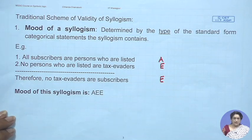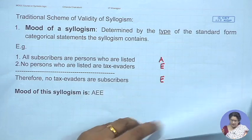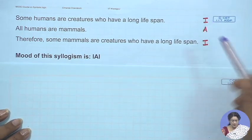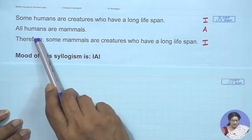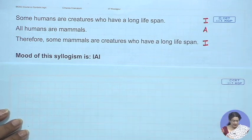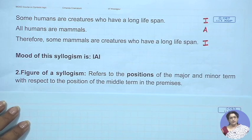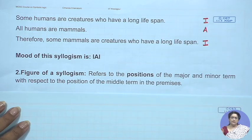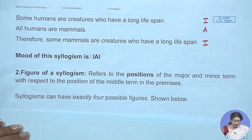Similarly, the figure - when we say figure we actually mean a shape. Here is another example: 'Some humans are creatures who have a long life span; all humans are mammals; therefore some mammals are creatures who have a long life span' - the mood is IAI. As for figure, it refers to the positions of the terms in the syllogism - the major, minor, and middle term. There can be only so many configurations of these terms within the premises - where are the major, minor, and middle terms located - and accordingly they figured out there are only four possible figures.